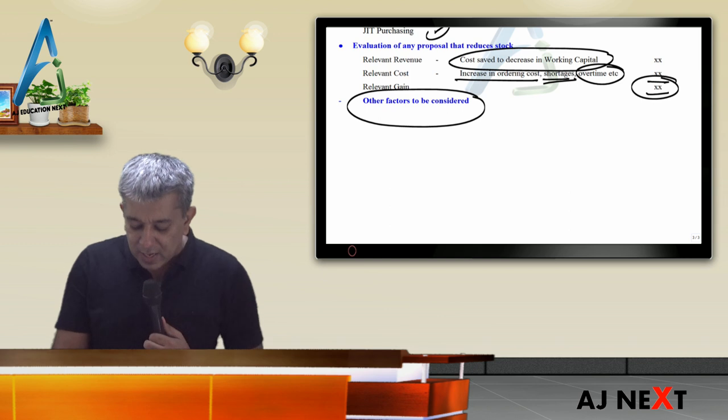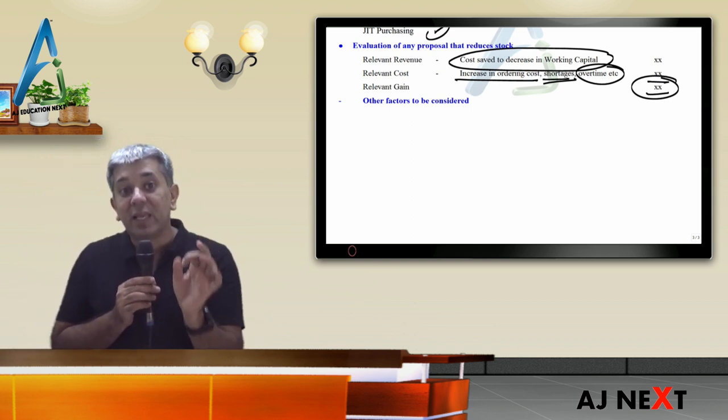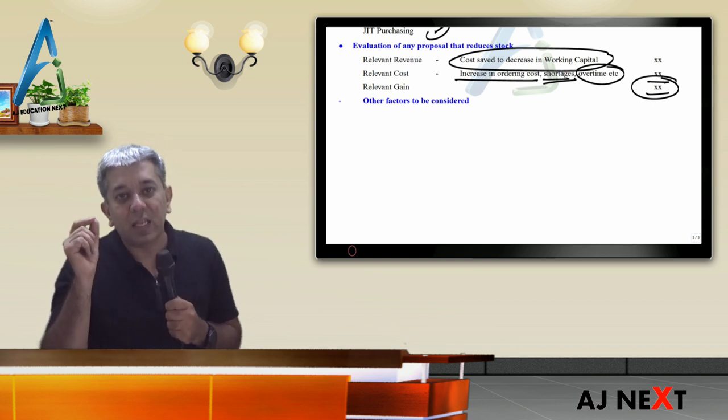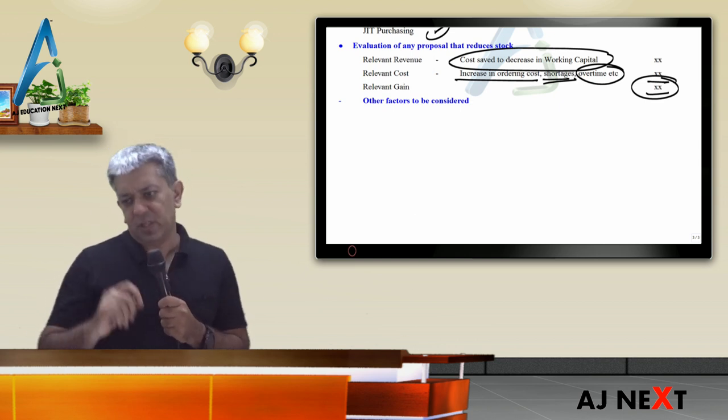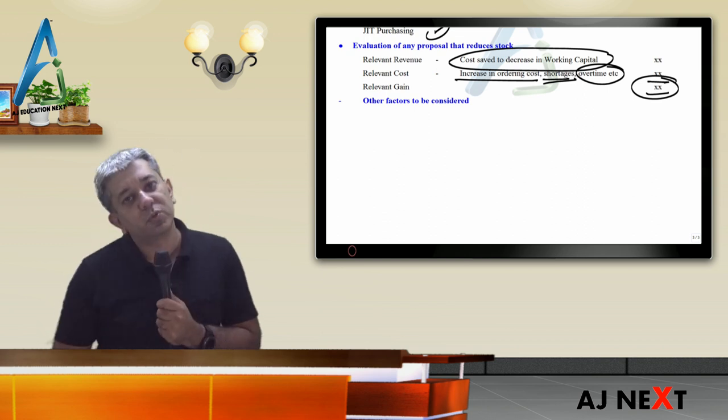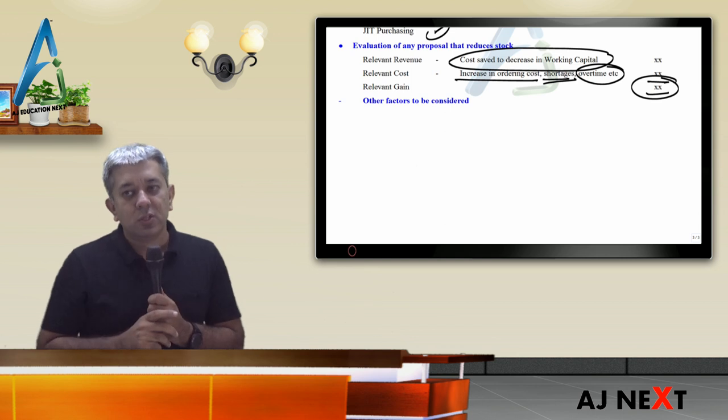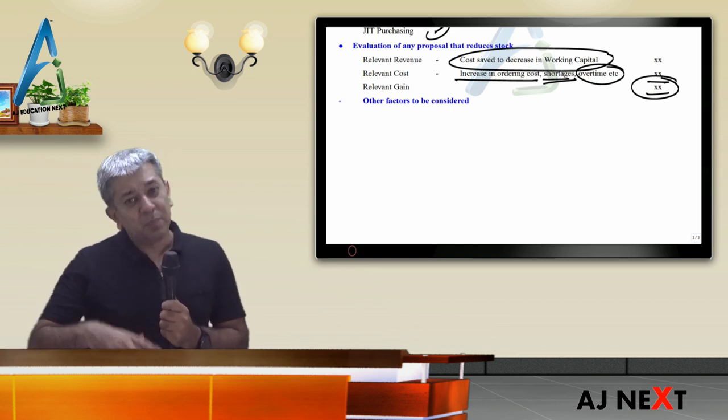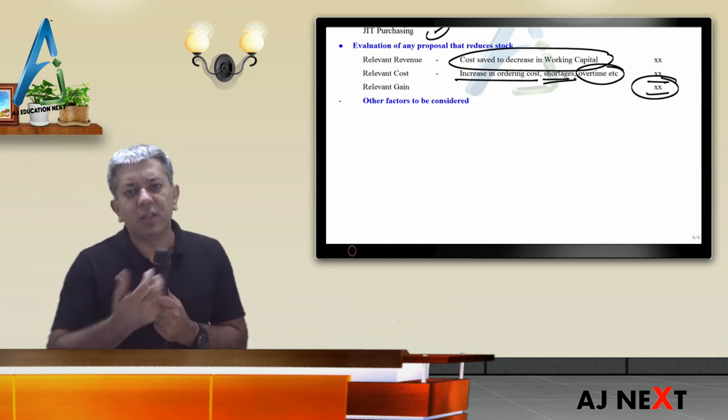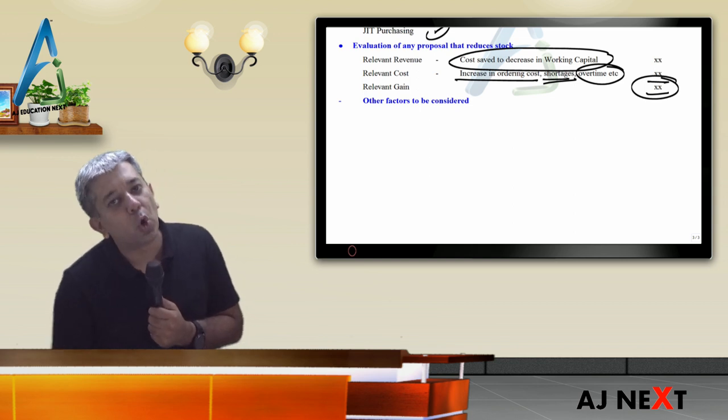Evaluation of any proposal that reduces stock: mostly questions will come on pull versus push system. Pull system means JIT system. If you purchase small lots, don't keep finished goods stock, obviously your interest cost will be saved because carrying cost will fall since you're not keeping stock. But there are disadvantages too: stock-outs can happen, ordering costs will rise, shortages can happen if demand increases, workers may need overtime pay.